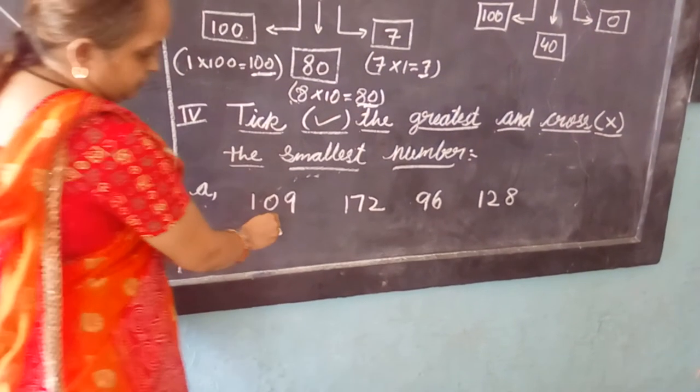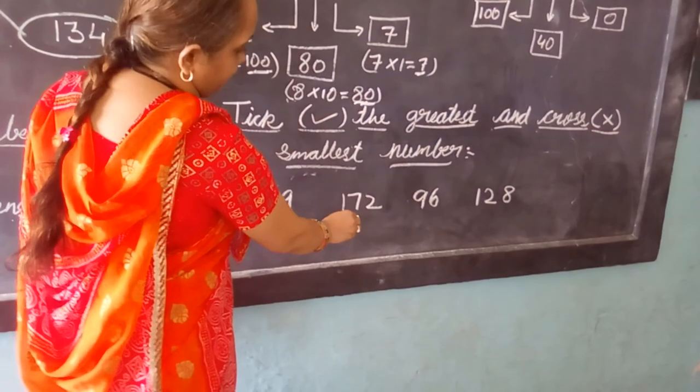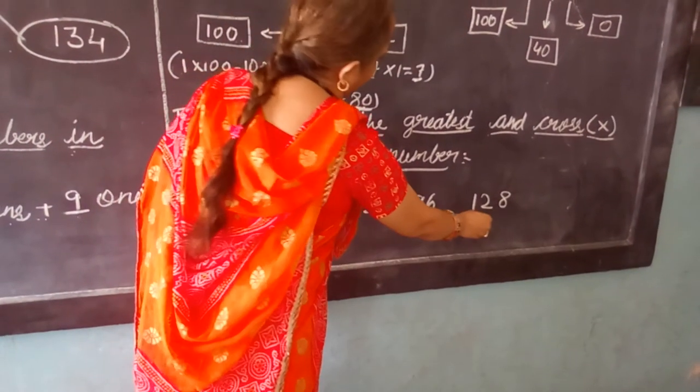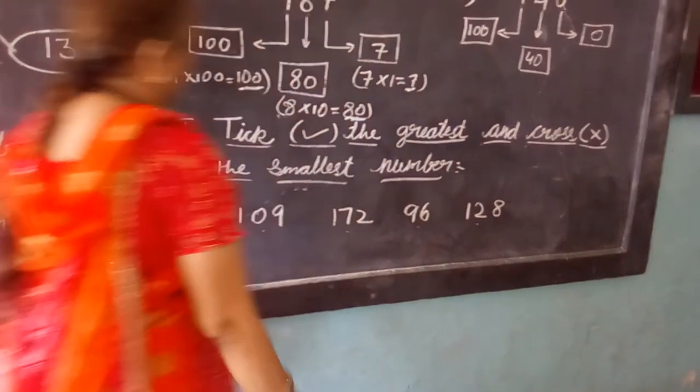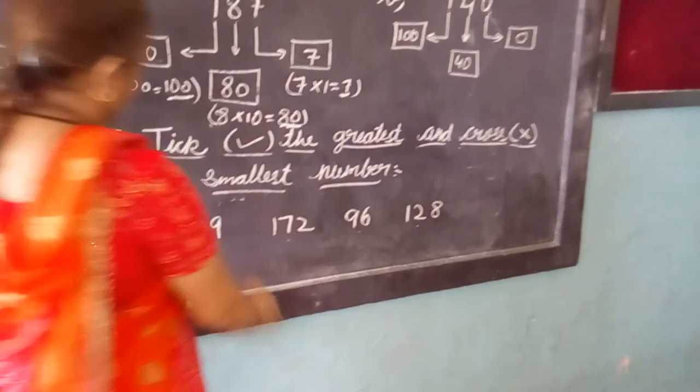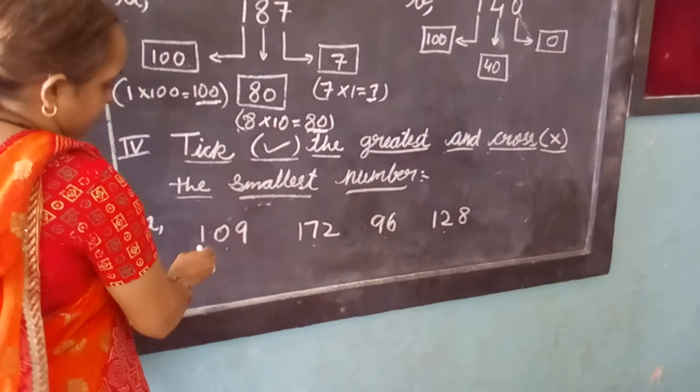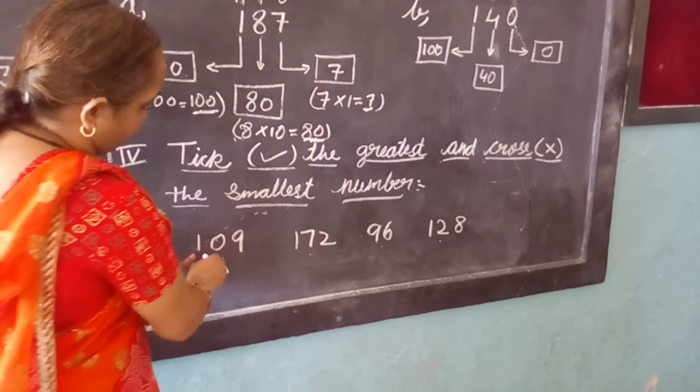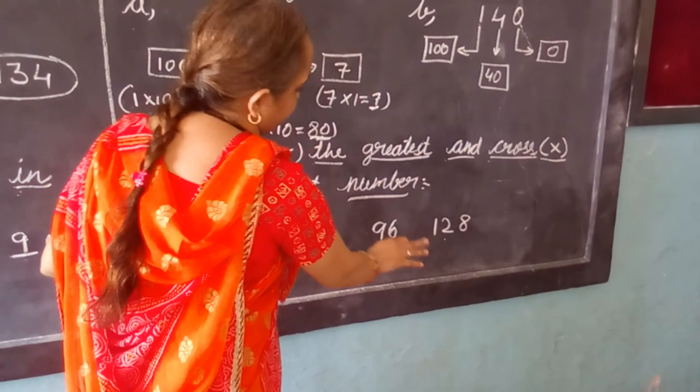This is 109, this is 172, 96, and 128. First we are finding greatest. Here we will go for 100 place. 100, 100, here it is only 10, here 100.